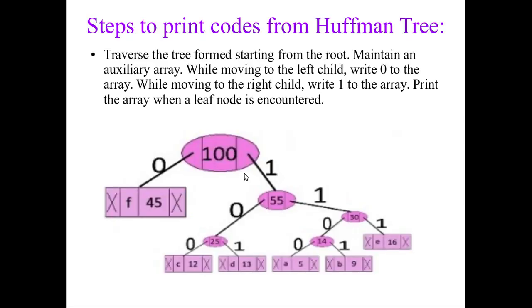Now you have to assign values of 0 and 1 to the Huffman tree. To the left child you give 0 and to the right child you give 1. According to this rule, for the left child edges I am giving 0 and for the right child I am giving 1. According to that rule we have assigned the values and now we can write the code words for the characters.